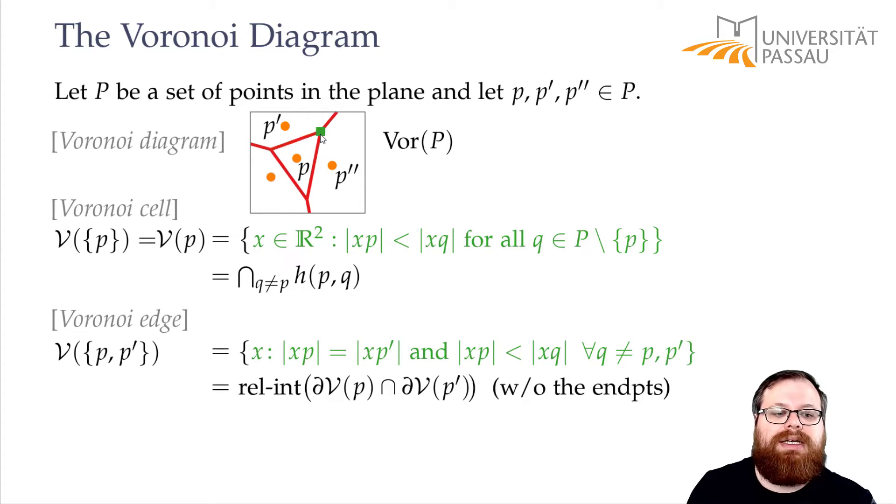Because the endpoints are our Voronoi vertices. A Voronoi vertex is defined via three points: P, P', and P''. This is where the boundary of the Voronoi cell of P and of P' and of P'' meet.